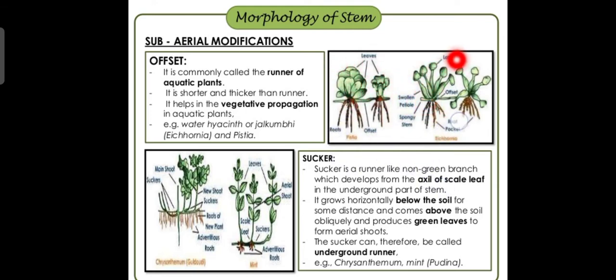You can see the swollen part — the lamina — with the offset in the middle. Roots grow inward with spongy roots. This is what is called the runner of aquatic plants, i.e., the offset.